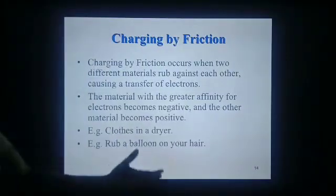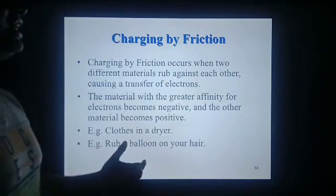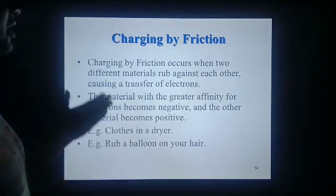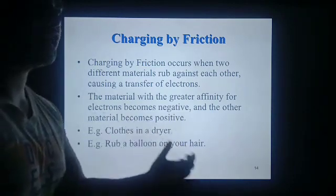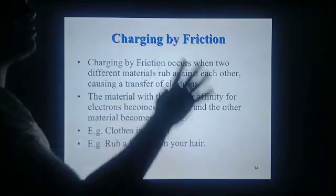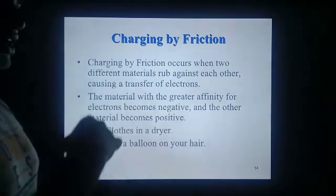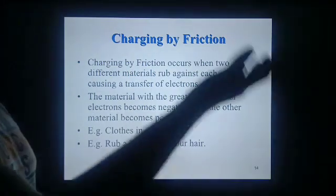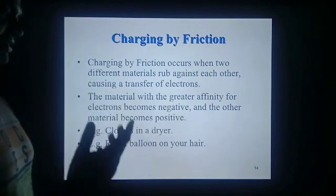How is the charge being created? First method is friction. When two different types of materials are rubbed against each other, they transfer electrons. Charging by friction occurs when two different materials rubbed against each other cause a transfer of electrons. The body which lost electrons becomes positively charged, and the body which gains electrons becomes negatively charged.